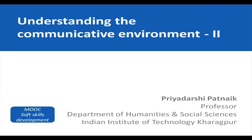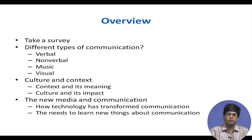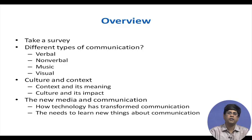We now move on to the second part of our course, the second lecture, which is about understanding the communicative environment — part two of a talk given earlier. Before we proceed, here is an overview of what we are going to do together. I would like to bring back to your memory the things we did in the last session: the fundamental aspects of communication like overt, implicit, and explicit communication, the communication process, the various barriers and filters, and the communication model. You must have wondered why these elements are relevant if you are going to talk about soft skills.